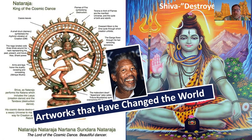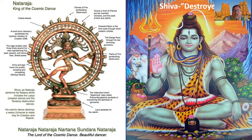Now we turn to our third major god, which is Shiva, or the Destroyer. If you worship Shiva, you believe he is also the Preserver and also Brahma. The most famous image of Shiva is called the Shiva Nataraja, which translates as 'dancing Shiva.' Here you can see him dancing.